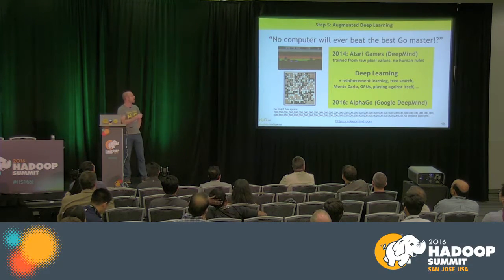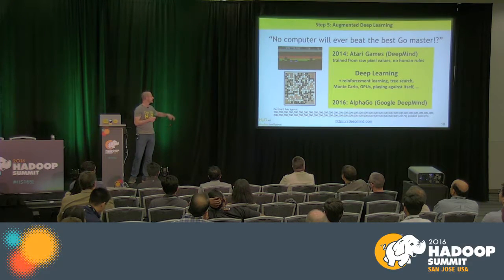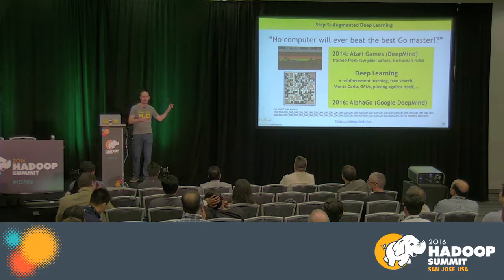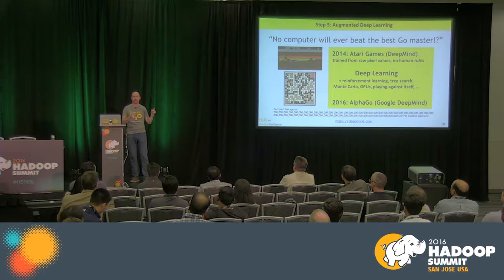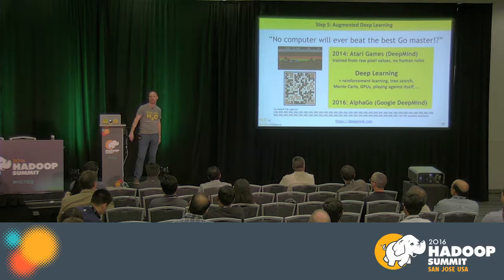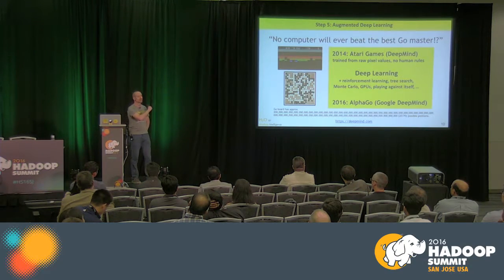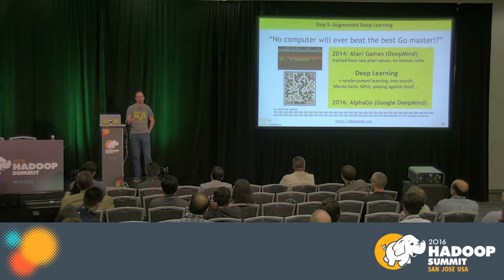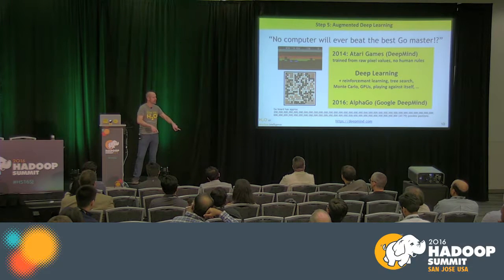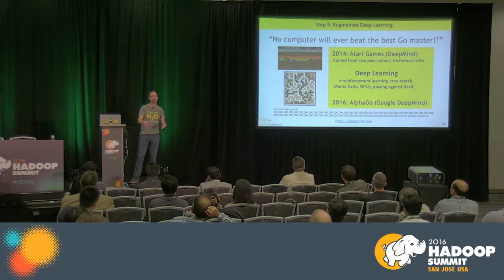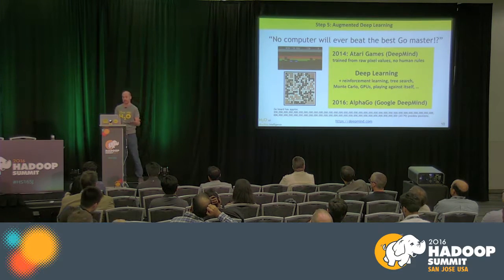Then AlphaGo beat the smartest Go player in the world. It's a 19-square board with stones that are either black or white — two times ten to the 170 different combinations, the square number of atoms in the universe. People thought no machine could guess better than a human. But in a way, the human isn't perfect either. It's just brute forcing it with smart algorithms, going down trees, trying different branches, playing against itself, throwing hundreds of millions of random combinations at it. We're at an age where we can brute force pretty much anything.